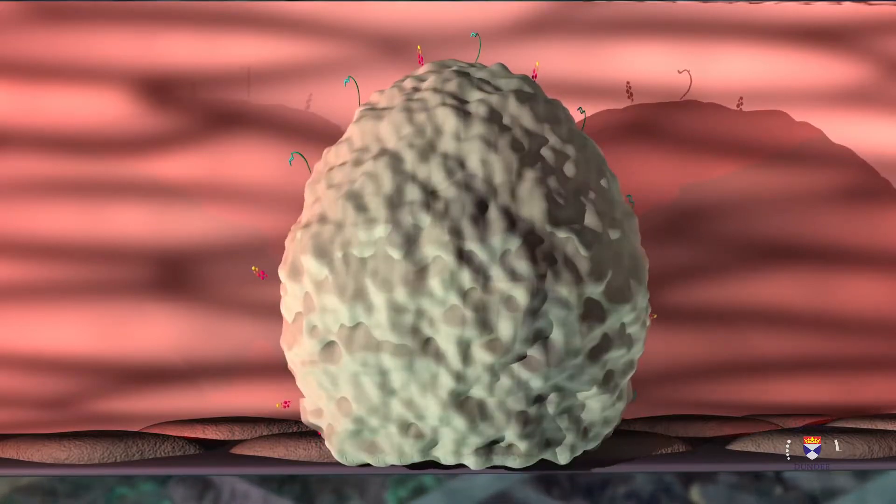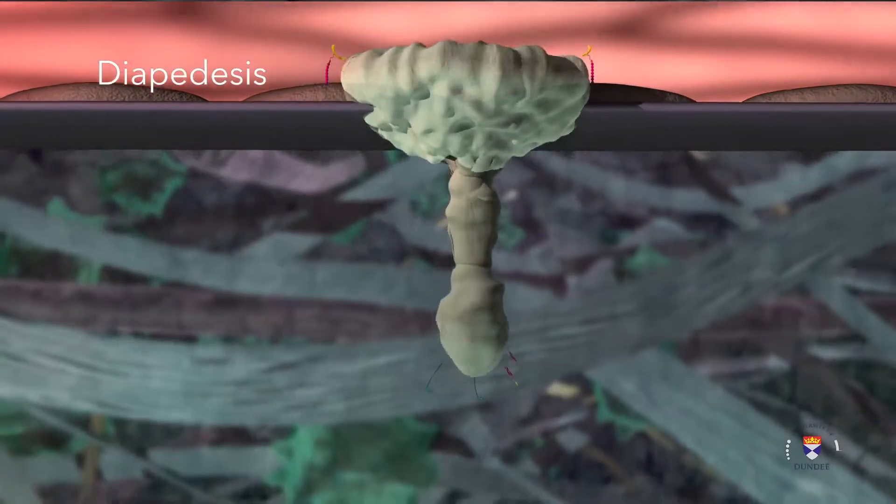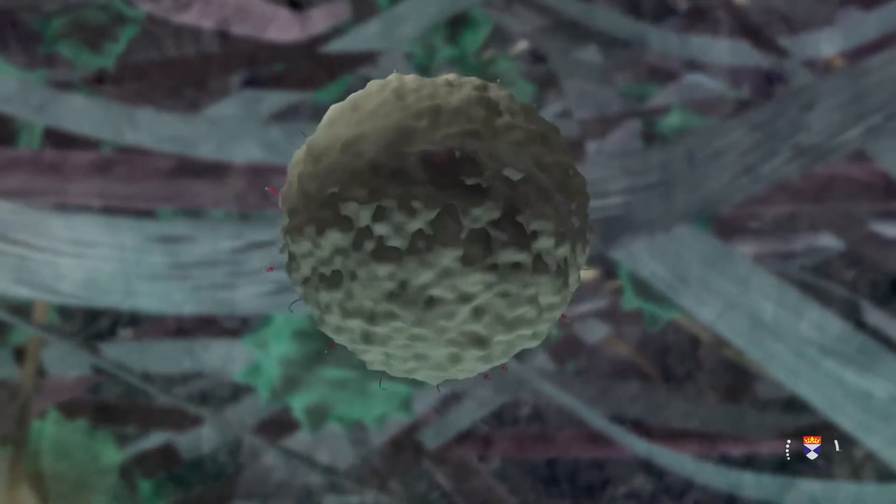The leukocyte crosses the vessel wall by extending its pseudopods through the gaps, pulling themselves through and into the extravascular space. This process is known as diapedesis.